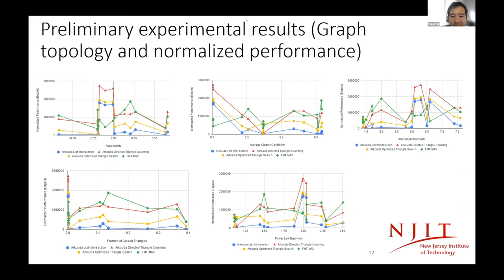We're running a little tight on time. Could you please wrap it up? Okay, I'm close to the end. We also do some experiments to check the topology and normalize the performance. We can see that for different graph diameter and the different number of triangles, even for the same K-truss algorithm, the performance are very different.